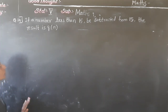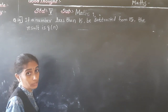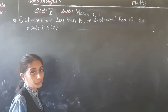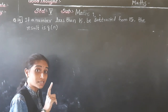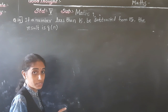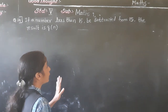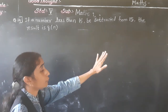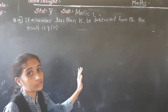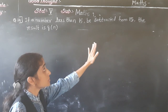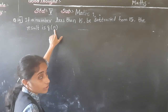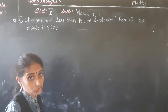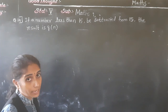Let's solve question number 14. If a number less than 15 be subtracted from 15, the result is 9. We have to use the letter N. The number which we don't know, we consider N.